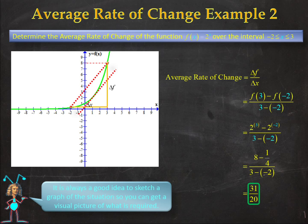I wonder if this is always the case. If you have a function and you've calculated the average rate of change between two points, does there have to be a tangent line between those two points that has exactly the same slope? Something for you to think about. Thank you for watching.